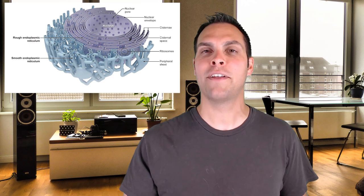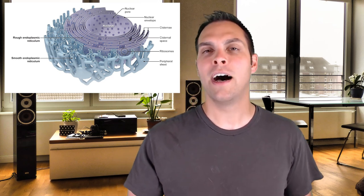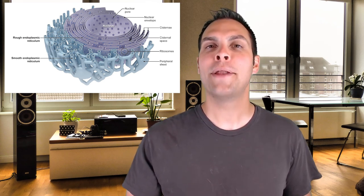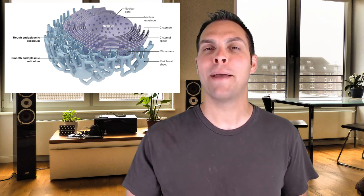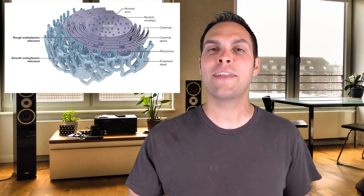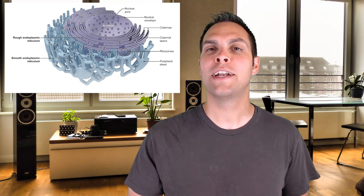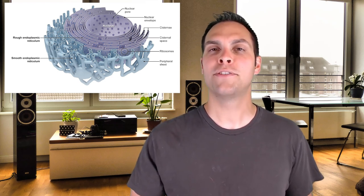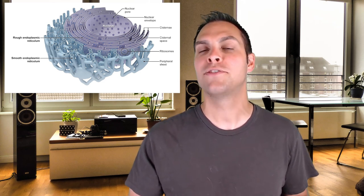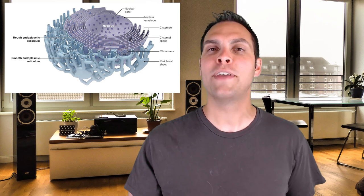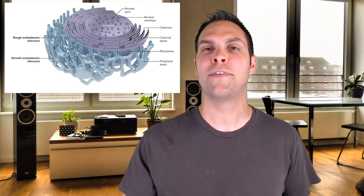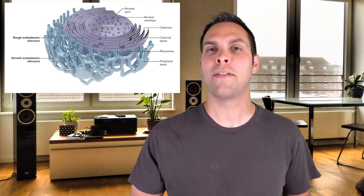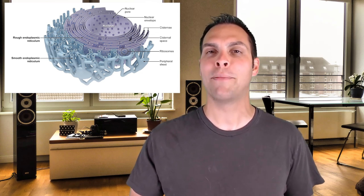The endoplasmic reticulum is a sprawling organelle that is physically attached to the outer membrane of the nucleus. When proteins are translated by bound ribosomes, they are either inserted directly into the membrane of the rough ER or secreted into the lumen — the internal portion of the rough ER. In both cases, those proteins are likely destined for further modification before being trafficked to their final destination. The rough ER also serves as our membrane maker — this is where the phospholipids that help build our biological membranes are actually created.